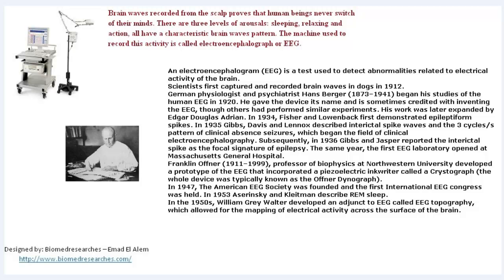Brain waves usually recorded from the scalp prove that human beings never switch off their minds. There are three levels of arousal: sleeping, relaxing, and action. All have a characteristic brain wave pattern. The machine used to record these activities is called an electroencephalograph, or EEG, and this is a sample of a modern EEG machine.